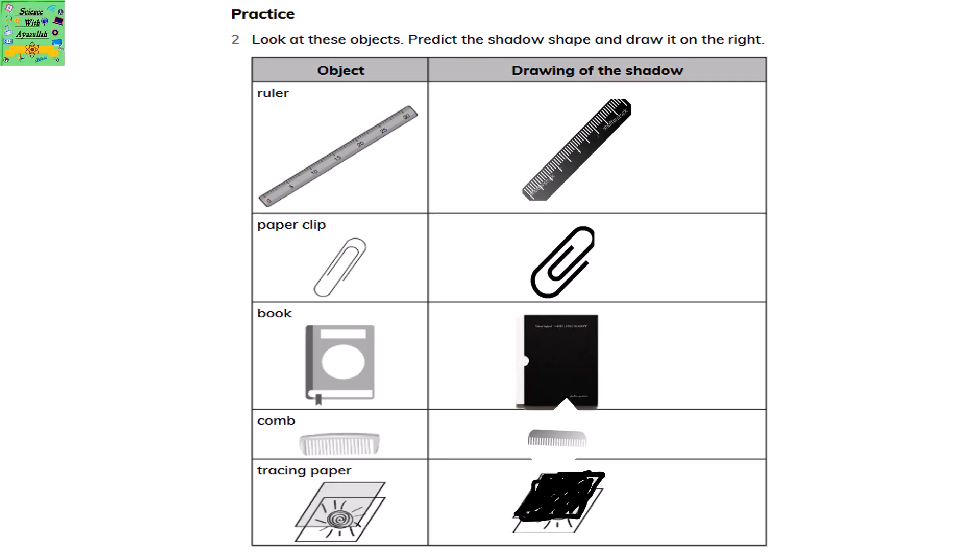A ruler's drawing of the shadow is given on the right. Then there's a paper clip, there's a book, and a comb and tracing paper shadow.